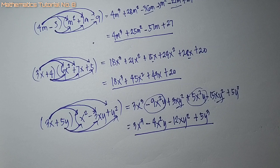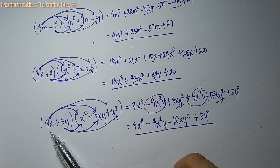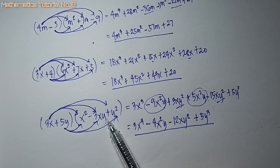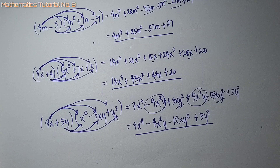So ang product: 3x cubed minus 4x squared y minus 12xy squared plus 5y cubed. Again, parihas ang rule sa multiplication of polynomials — ang tanang terms sa first polynomial ma-multiply nato sa tanang terms sa second polynomial, pagkahuman i-add nato ang parihas o similar terms. That is how we multiply polynomials.